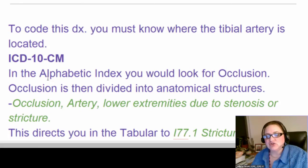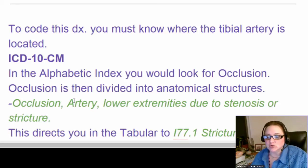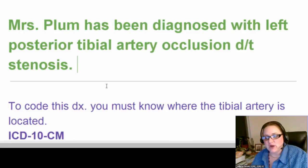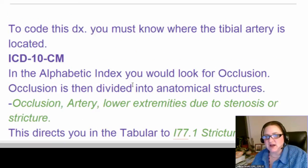In ICD-10, you're going to look in the alphabetic index first, because when you're looking up codes, you always want to go to the index first, and you're going to look under occlusion. For occlusion, it's divided anatomically — you'll have artery and all different types of things that can be occluded, but we're doing artery. Now, if you don't know where the tibial artery is, then you cannot code this diagnosis, because you go to occlusion, you know it's an artery, but then it indexes into lower extremities due to stenosis or stricture.